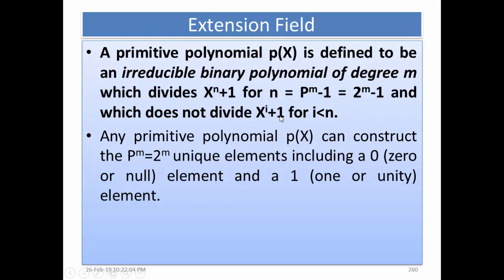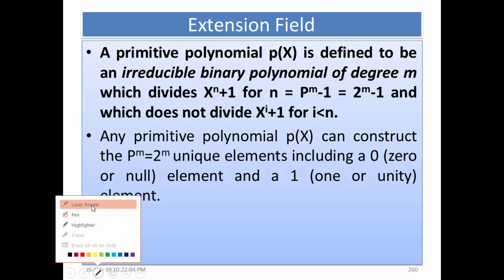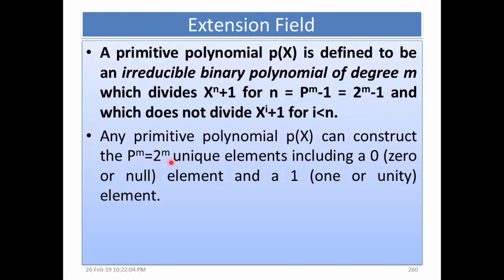The primitive polynomial also does not divide x^i plus 1 for i less than n. We will see an exercise to make these conditions clear. Any primitive polynomial P(x) can construct GF(p^m) — that is 2^m unique elements including the 0 element and the 1 (unity) element.